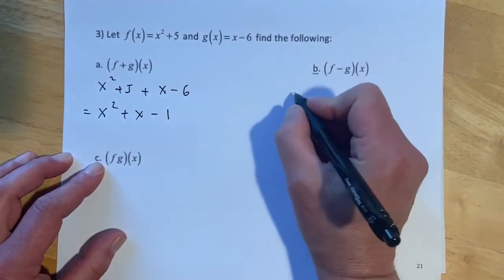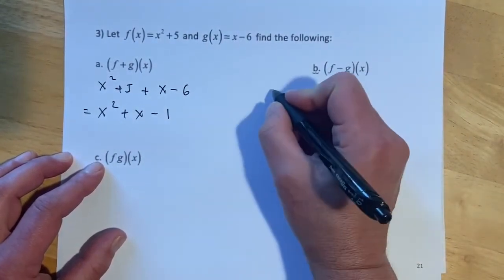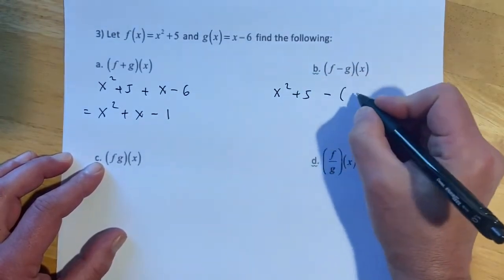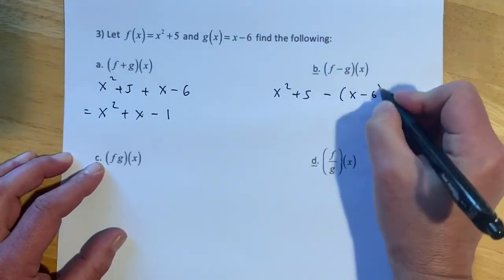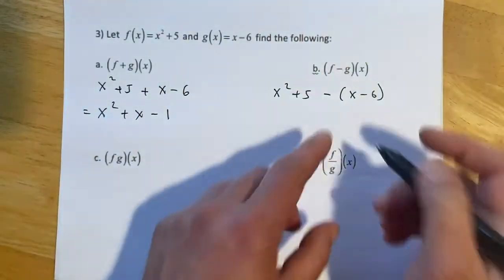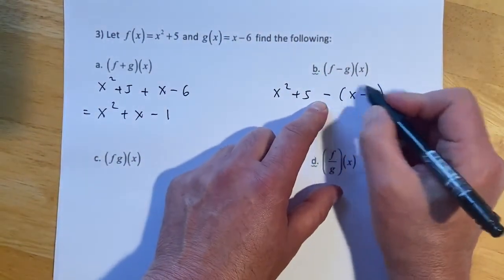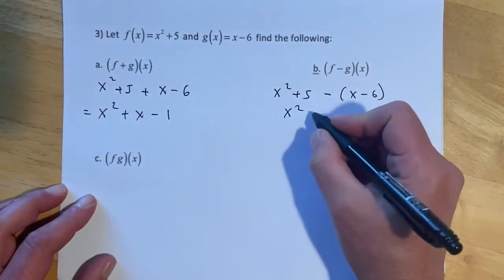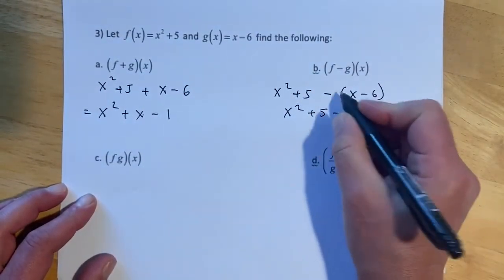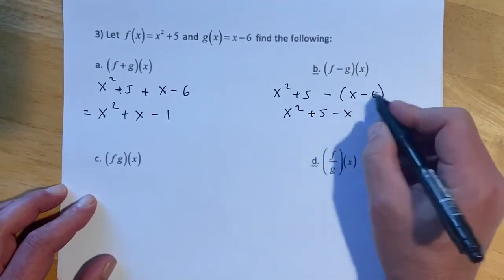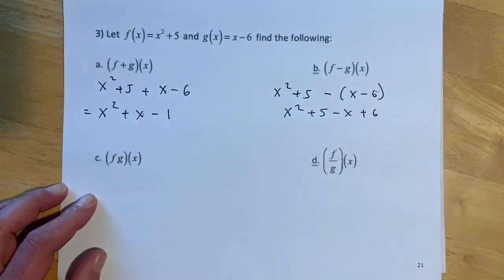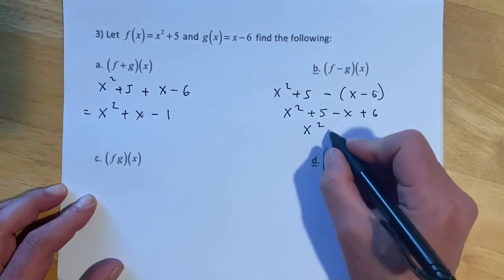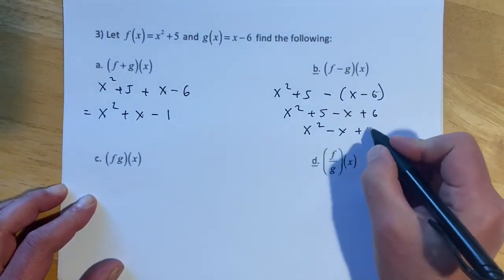f minus g. So here we'd have x squared plus 5 minus. And then really important to get the parentheses around the second term anytime we're subtracting. And that negative gets distributed through. So x squared plus 5 minus x minus a negative 6. And that's the sign that ends up going wrong is right there. So then this will be x squared minus x and looks like plus 11.